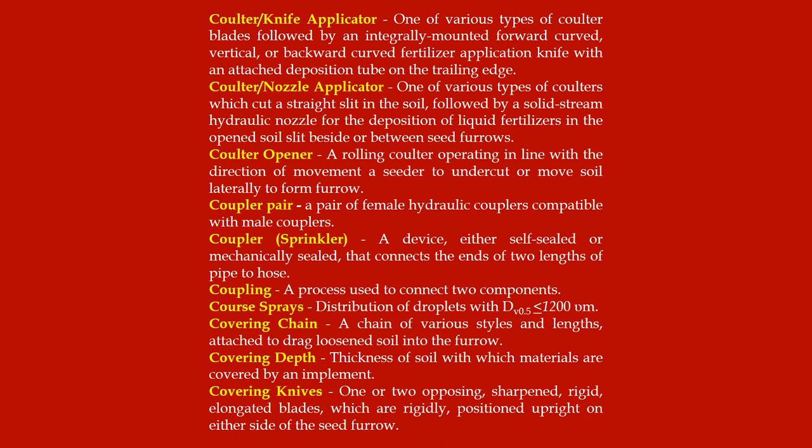Colter opener: a rolling colter operating in line with the direction of movement of a seeder to undercut or move soil laterally to form a furrow. Coupler pair: a pair of female hydraulic couplers compatible with male couplers. Coupler sprinkler: a device either self-sealed or mechanically sealed that connects the ends of two lengths of pipe to hose. Coupling: a process used to connect two components.